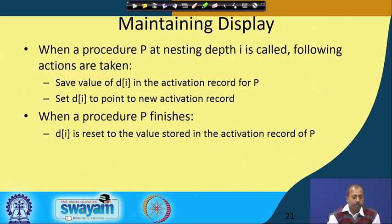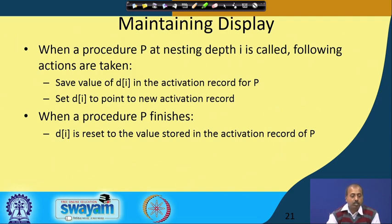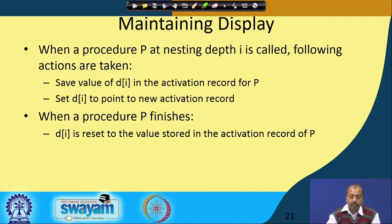Maintaining the display is a problem because the compiler has to generate extra code for maintaining displays at run time. When a procedure P at nesting depth i is called, two actions are performed: save the value of d[i] in the activation record for P, and set d[i] to point to the new activation record. The previous display value is saved so it can be restored when returning. When procedure P finishes, d[i] is reset to the value stored in P's activation record, restoring the display to its proper value.